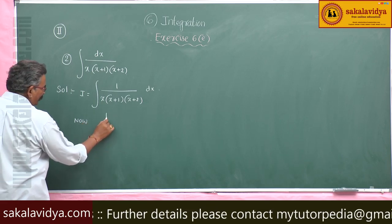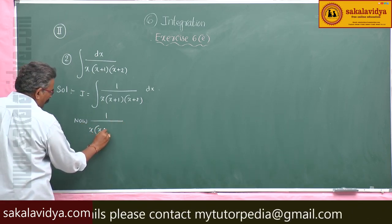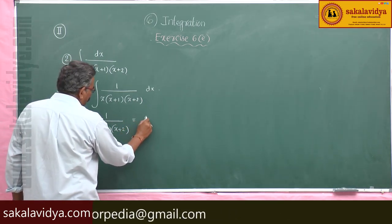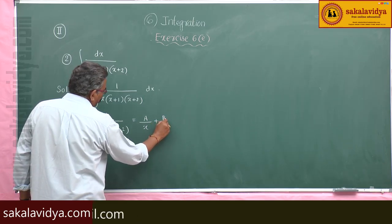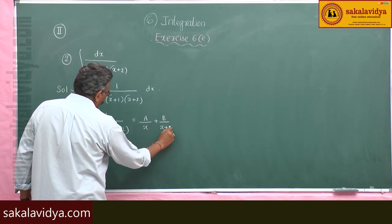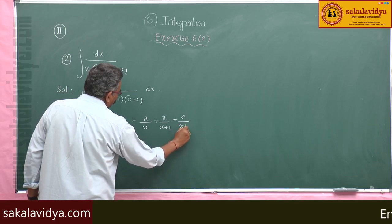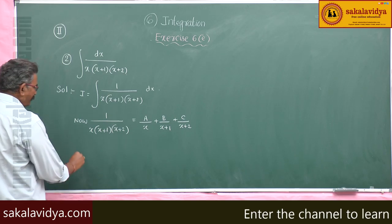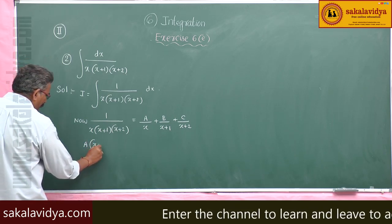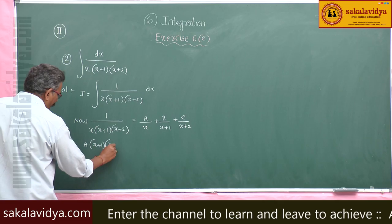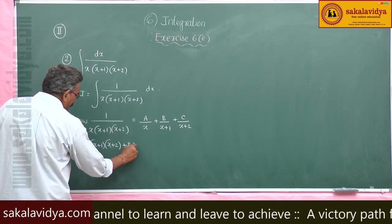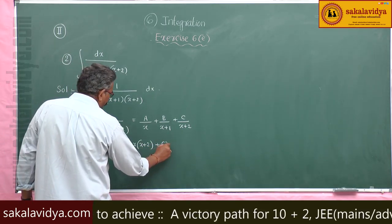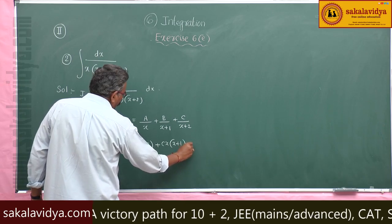We write 1 divided by x(x+1)(x+2) equals A over x plus B over (x+1) plus C over (x+2). Multiplying both sides by x(x+1)(x+2), we get: A(x+1)(x+2) plus B·x(x+2) plus C·x(x+1) equals 1.